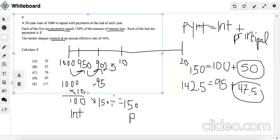So it says each of the last 10 payments is X, right? So all of these are the X region.